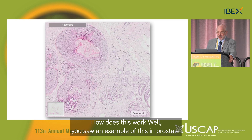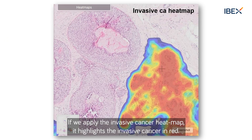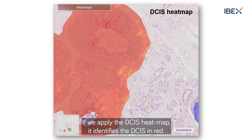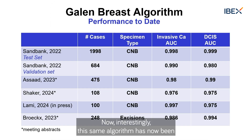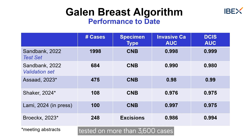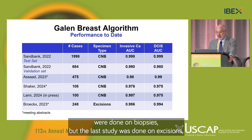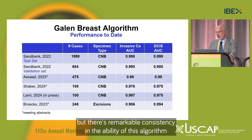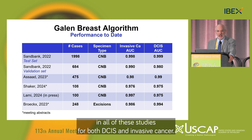Here is an example of DCIS on the left with a focus of invasive cancer on the right. If we apply the invasive cancer heat map, it highlights the invasive cancer in red. We apply the DCIS heat map, it identifies the DCIS in red. This same algorithm has now been tested on more than 3,600 cases from six different sites — most studies done on biopsies, one on excisions — with remarkable consistency, AUCs ranging from about 0.98 to 0.99 for both DCIS and invasive cancer.